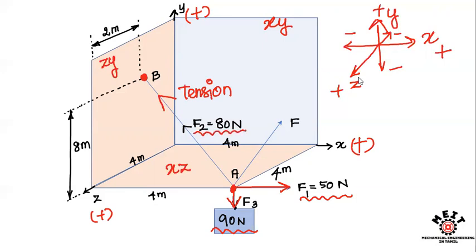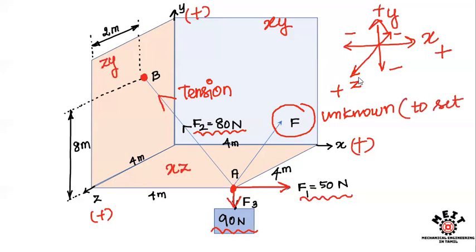Without an unknown force, the system is not in equilibrium condition. We can add an unknown force to bring the system into equilibrium. So, to set the system in equilibrium condition, we add the unknown force F. How do we find this unknown force?